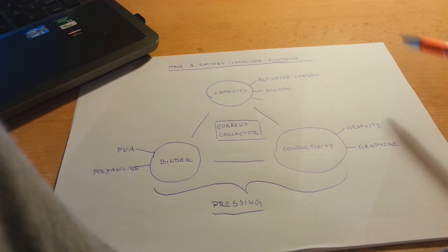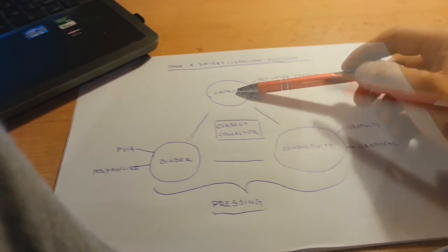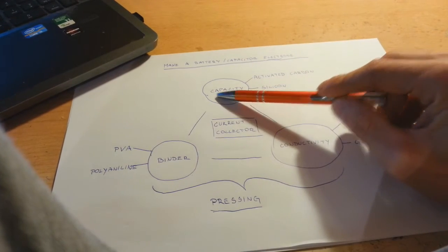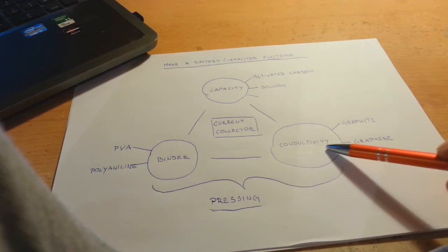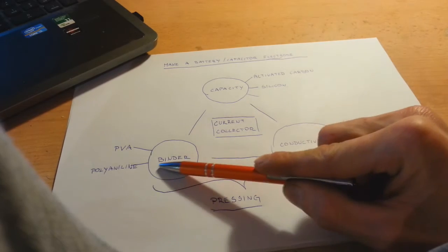You need three main components: some materials for the capacity, some material for conductivity, and some binder.